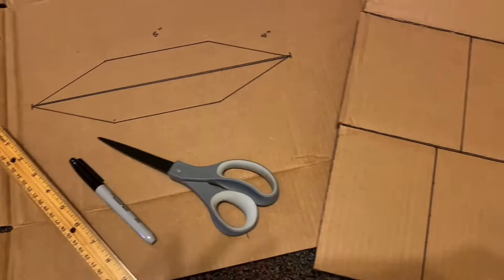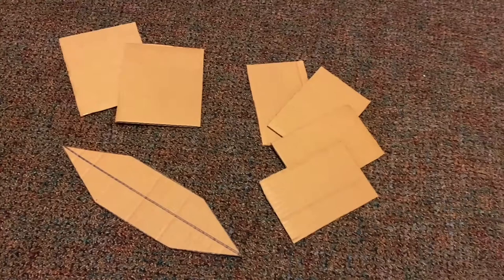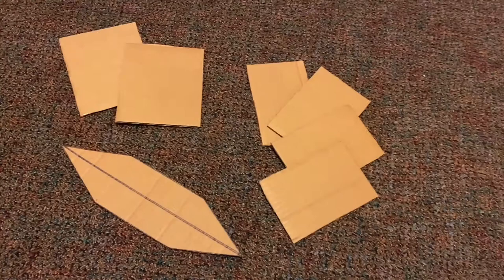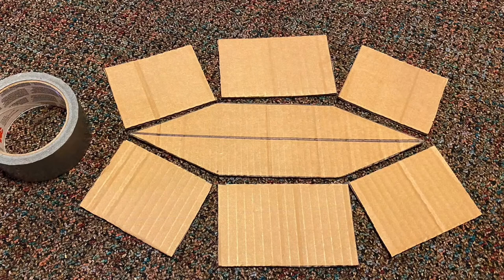My first step was to figure out what shape I wanted and to trace it all out. Then I cut out all the pieces that I just drew. I realized I wanted them a little bit smaller so here is the final cutting out of my cardboard.